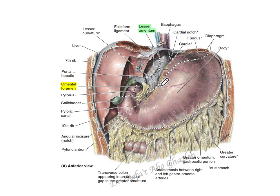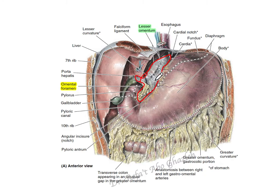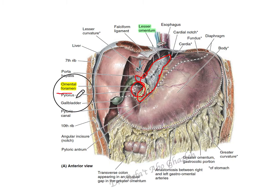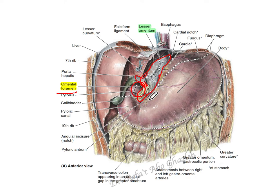To summarize: this is the lesser omentum membrane, and behind it there is the lesser sac. The entrance to the lesser sac is called the omental foramen. You can see the boundaries of it, and there are three structures located inside the hepatoduodenal ligament.